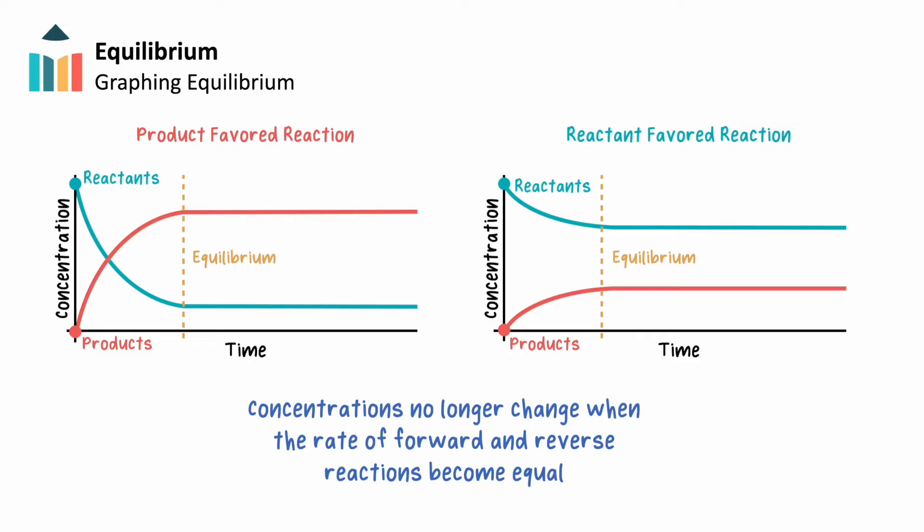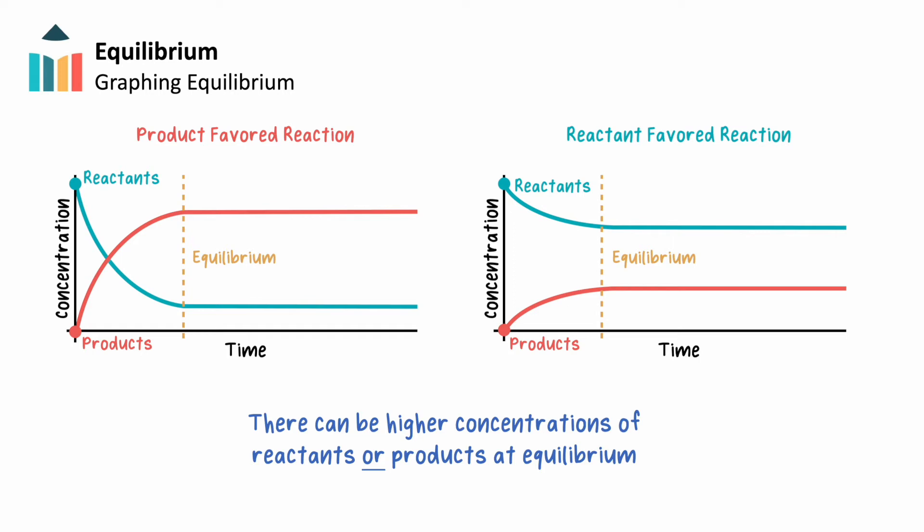Note that as the two graphs indicate, at equilibrium, there could be a higher concentration of products or there could be a higher concentration of reactants. But once equilibrium is established, indicated by the dashed vertical line, concentrations of both reactants and products remain relatively constant.